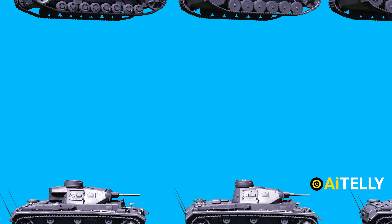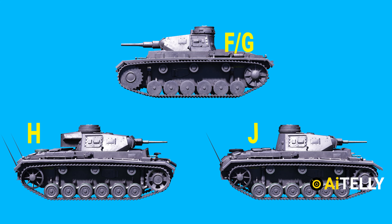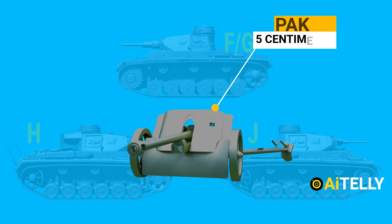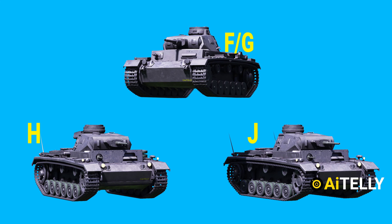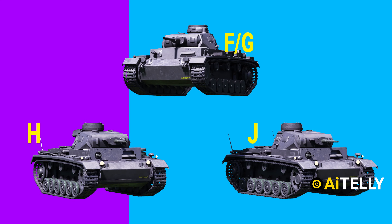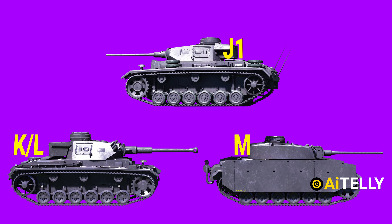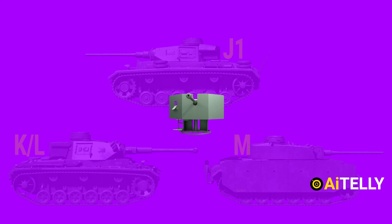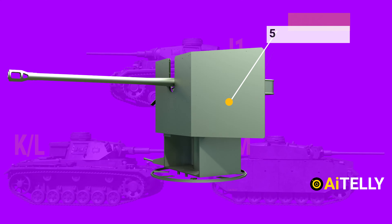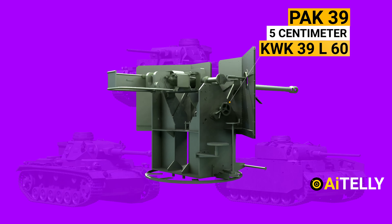The subsequent Ausf H through J were upgraded with the 5 centimeter KwK 38 L/42, and the Ausf J1 and M were fitted with the longer 5 centimeter KwK 39 L/60 in response to increasingly superior equipped and armored opponents.